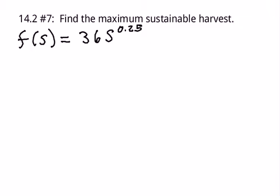14.2 number seven, you're asked to find the maximum sustainable harvest given the function f of s equals 36s to the 0.25 power, and you need to know a few things before you can solve this problem.